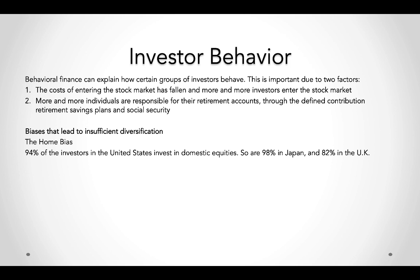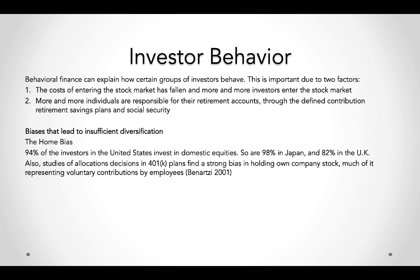This home bias is hard to explain on rational grounds — if you're seeking high returns, you should go wherever those returns are, even into different markets. People dislike ambiguous situations where they feel unable to specify a gamble's probability distribution — often where they feel little competence to evaluate. On the other hand, people show excessive liking for familiar situations. Studies of 401(k) allocation decisions find a strong bias toward holding own-company stock, much of it from voluntary employee contributions — associated with familiarity, though it is not a rational way to diversify.